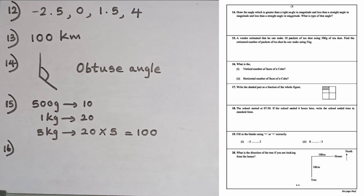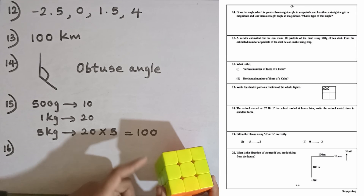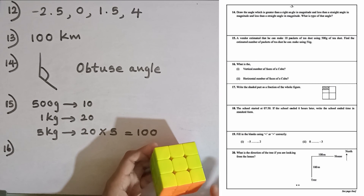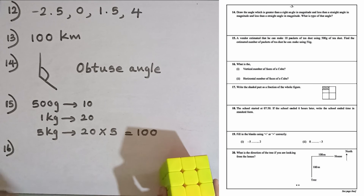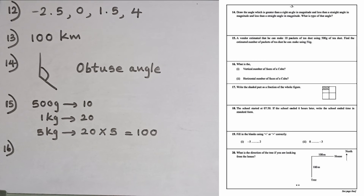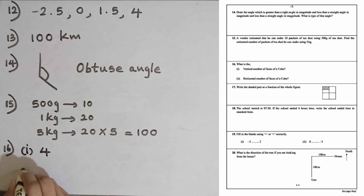Question number sixteen: find the vertical and horizontal number of faces of a cube. If I take a cube, there are 4 vertical faces: 1, 2, 3, 4. For the horizontal number of faces of a cube, there are 1 and 2. So the first answer is 4 faces and the second answer is 2 faces.